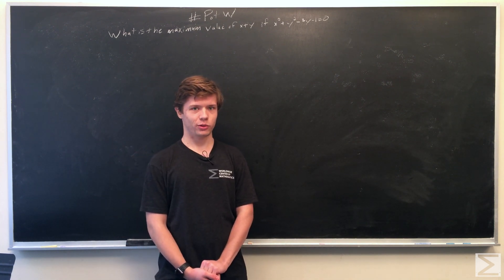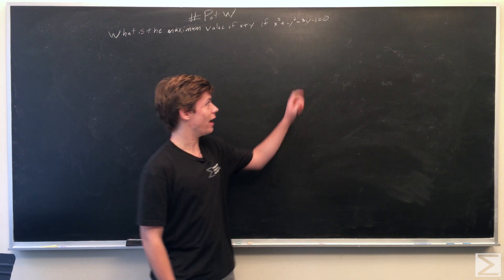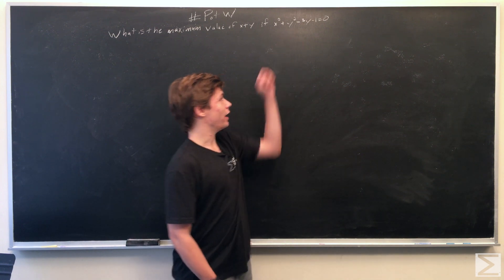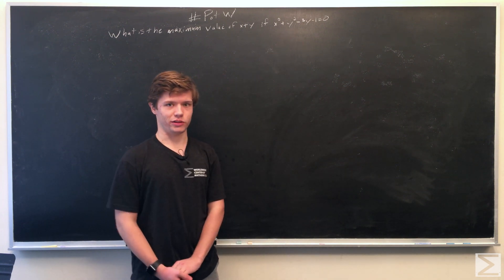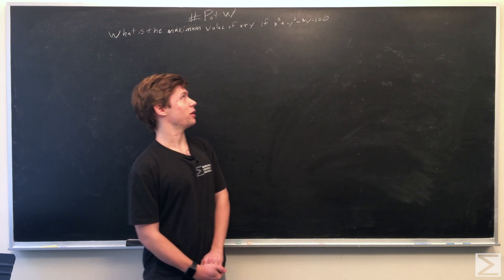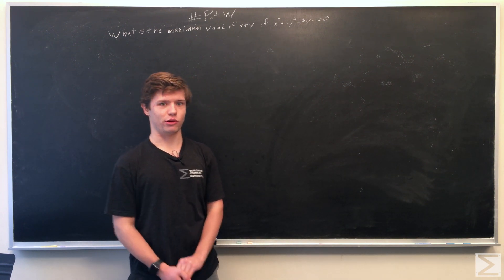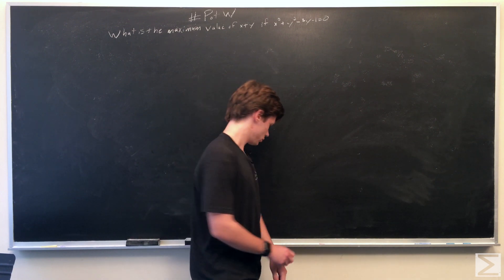The first thing we're going to do is look at this given equation: x squared plus y squared minus 3y minus 1 equal to 0.